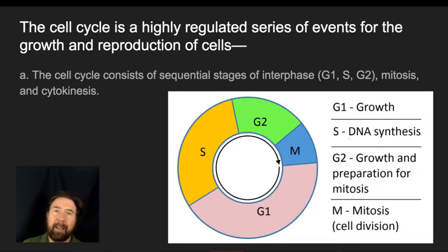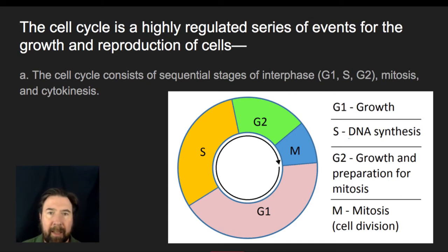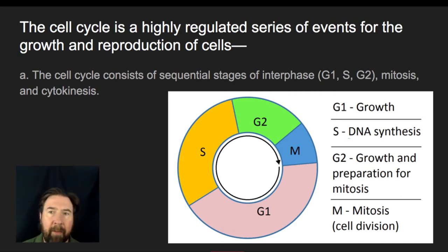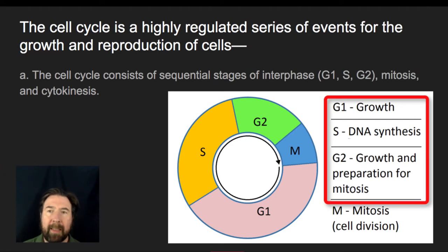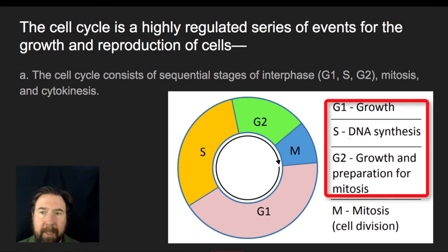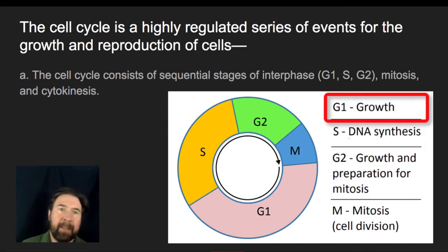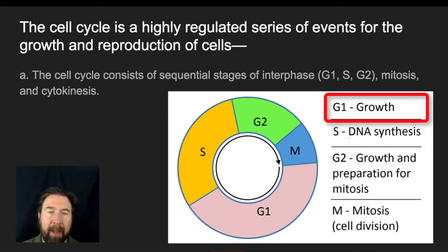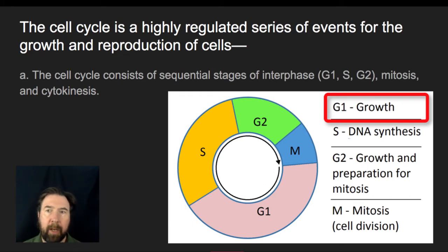As I mentioned before, the cell cycle is highly regulated — it's got a series of events. The cell cycle consists of interphase, which includes gap one, synthesis, and gap two, or G1, S, and G2 phases. What happens mostly in G1 is growth. After a cell has divided, it's half the size it was before division, and so it's going to go through an initial growth phase.